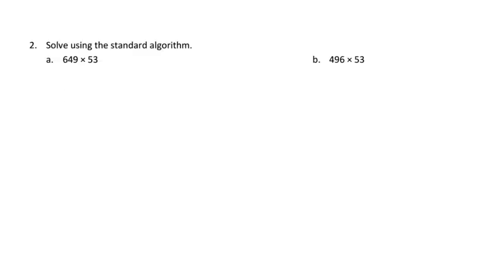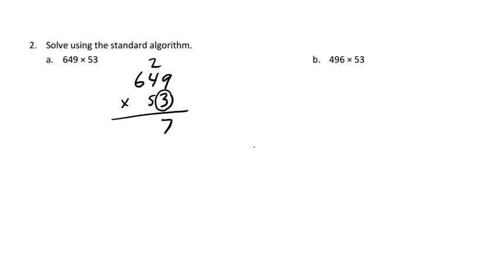Let's go to the next problems — there are two here. Standard algorithm: 649 times 53. Remember to pause the video and try it yourself — it might help to use graph paper so everything lines up. Working with the 3 first: 9 times 3 is 27, carry the 2; 4 times 3 is 12 plus 2 is 14, carry the 1; 6 times 3 is 18 plus 1 is 19.